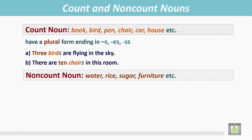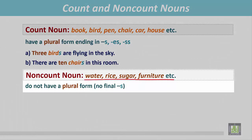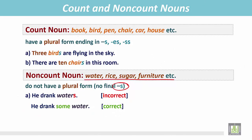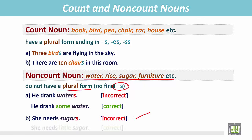Non-count nouns don't have a plural form — no final -s. 'He drank waters' is wrong because water is a non-count noun; the correct form is 'he drank some water.' Likewise, 'she needs sugars' is incorrect since sugar is uncountable. The correct form is 'she needs a little sugar.'